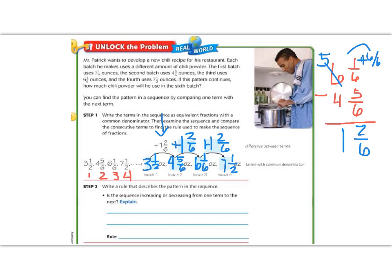Step 2 says write a rule that describes the pattern. Well, we know that our rule is going to get bigger. So we know that since 4 5/6 is bigger than 3 1/2, the pattern is increasing.